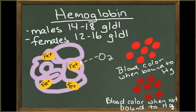Hemoglobin is reported in grams of hemoglobin per deciliter. The normal ranges are 14–18 grams per deciliter in males and 12–16 grams per deciliter in females. Each hemoglobin contains heme, which is a non-protein pigment complex, and each heme unit holds an iron ion.